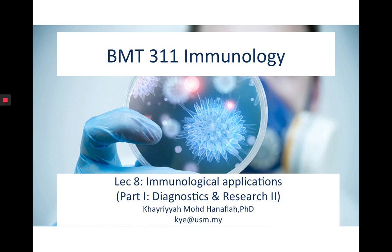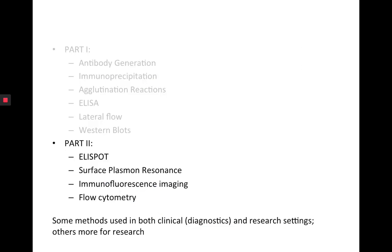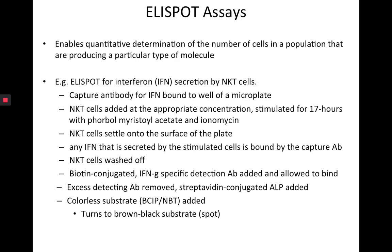The previous ones were largely limited to proteins and antibodies. In Part 2, we're going to cover ELISpot, surface plasmon resonance, immunofluorescence imaging, and flow cytometry. We'll spend quite a bit of time talking about flow cytometry as it's a very powerful tool in immunology, and the others we'll cover a bit more briefly.